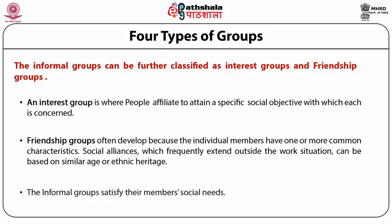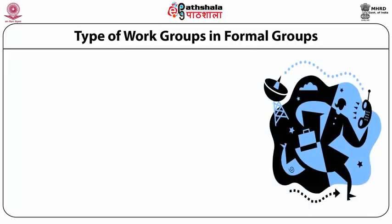Informal groups are basically meant to satisfy the members' social needs, which is very important in today's era. Now we will try to understand the different types of work groups that can be part of formal groups in the organization. These could be in the nature of production groups, management groups, service groups, project groups, or action and performing groups.